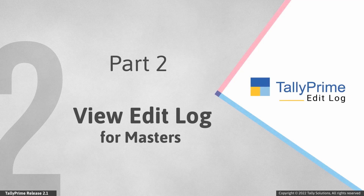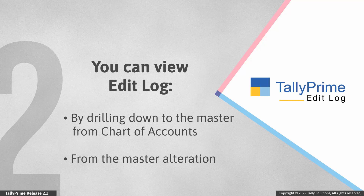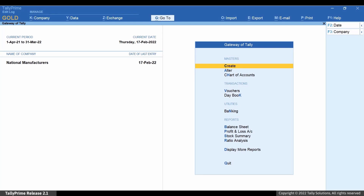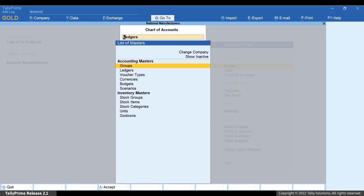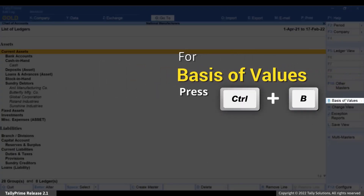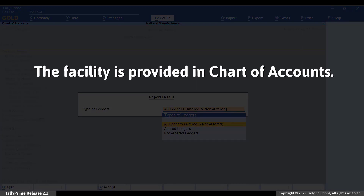Now let us see how to view Edit Log for Masters. In Tally Prime Edit Log, the facility to view Edit Log is provided for Ledgers, Stock Items, and Ledger or Accounting Groups. This is because alteration of only these masters has an impact on your financial data. You can drill down to the respective master from Chart of Accounts and then view Edit Log. You can also view the Edit Log from the Master Alteration screen. Press Alt-G, type or select Chart of Accounts and press Enter. Let's open for Ledgers. Press Ctrl-B or click Basis of Values. Press Enter on Show Report For. This facility is provided in Chart of Accounts in Tally Prime Edit Log.